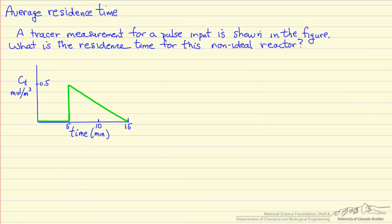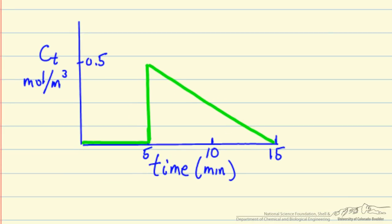In this example I will show how we calculate the average residence time for a non-ideal reactor if we do a tracer experiment where we inject a pulse and then measure the concentration as a function of time at the outlet of the reactor. Now this is a simplified diagram to make the calculations easy, and it does not represent what we would expect in a real system.